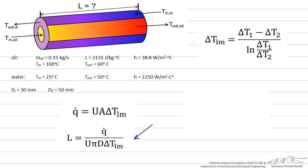Looking at this picture, we can see that our delta T1 is going to equal the temperature of the oil that's entering the system minus the water that's exiting the system. So that means that our delta T1 is going to equal 100 degrees C minus 50 degrees C or 50 degrees.